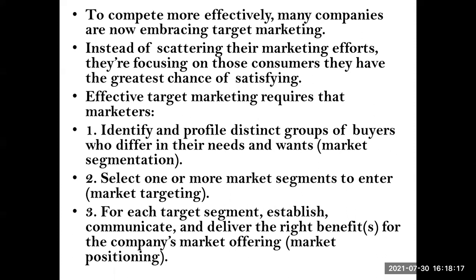In segmentation, we identify which groups of customers will purchase our product. For Hero Splendor, we identify that graduate people, middle-income groups, and Tier 1 city groups will buy the product. Then targeting — we target the most probable groups. Positioning means advertisement, communication, and delivery of the right benefit to the customer, motivating them to purchase.